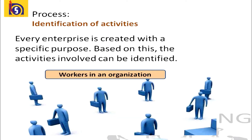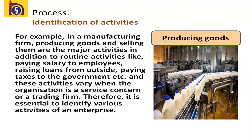The first step is identification of activities. Every enterprise is created with a specific purpose, and based on this, activities involved can be identified. For example, in a manufacturing firm, producing goods and selling them are the major activities, in addition to routine activities like paying salary to employees, raising loans from outside, paying taxes to the government, etc. These activities vary when the organization is a service concern or a trading firm. Therefore, it is essential to identify the various activities of an enterprise.